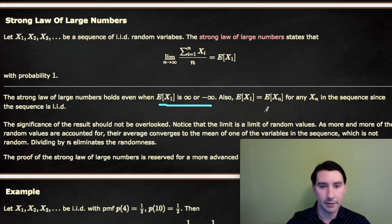It's a pretty significant result because what we have here on the left is random values. We're summing up a bunch of random numbers, and when we divide by n, that actually kills off all the randomness if we let n go to infinity. So eventually it has to go to a fixed number and the randomness is gone.